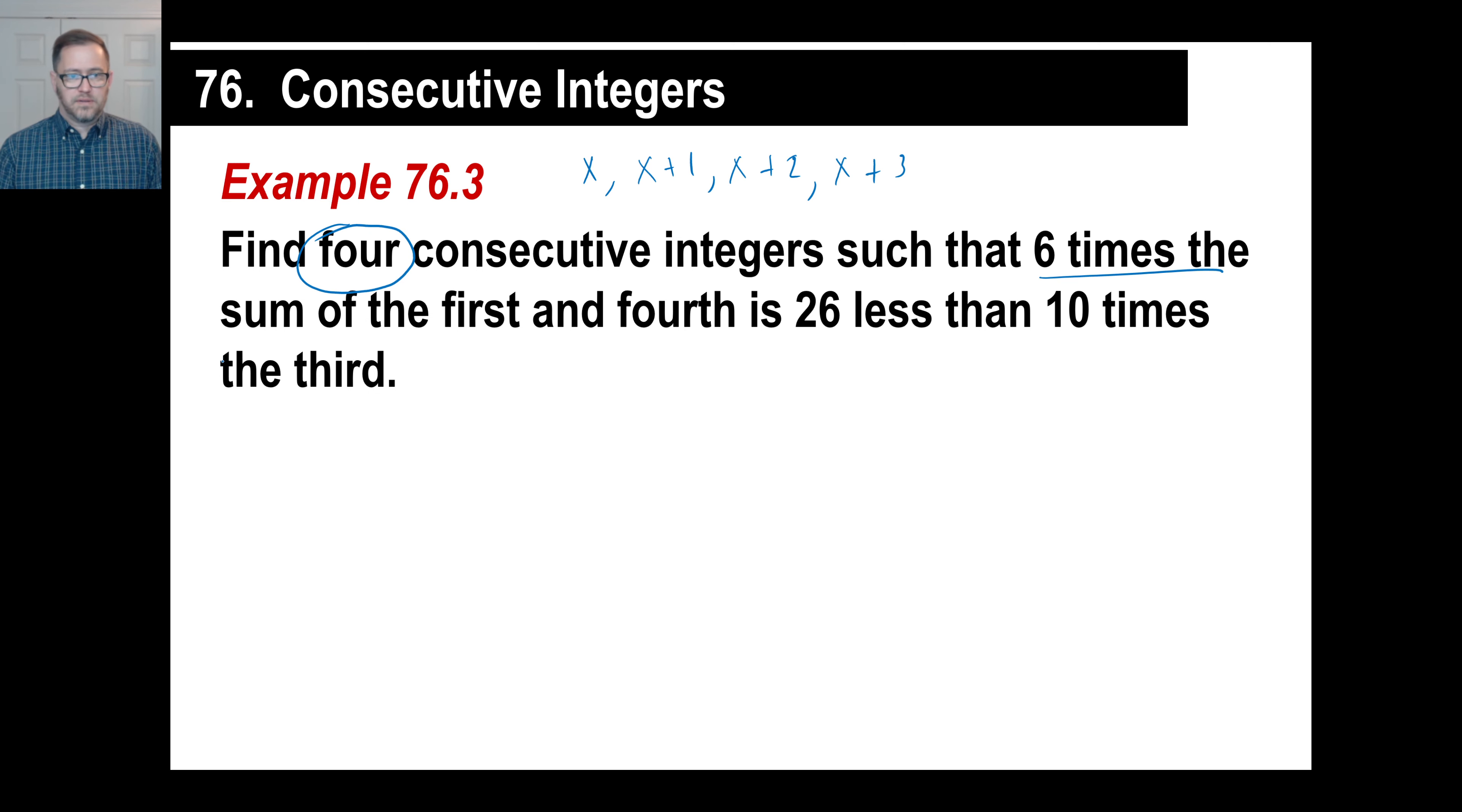Six times the sum of the first and fourth. So, let's add the first and the fourth. That'll be 2x plus 3, right? So, 2x plus 3. That's the sum. But we do six times that?